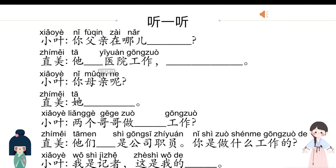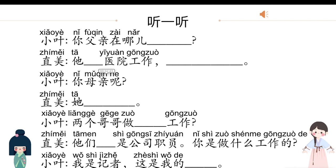这是小业，这是极美. Listen to the conversation and fill in the blanks. We will listen to the materials twice. 你父亲在哪儿工作？他在医院工作，他是医生. 你母亲呢？他不工作. 两个哥哥做什么工作？他们都是公司职员. 你是做什么工作的？我是记者，这是我的名片。